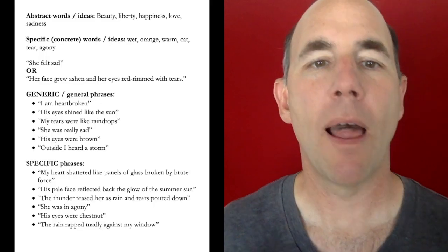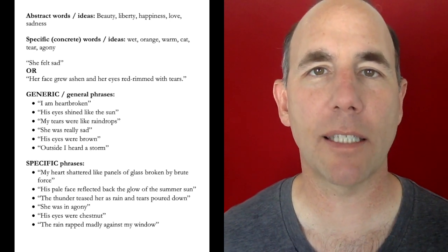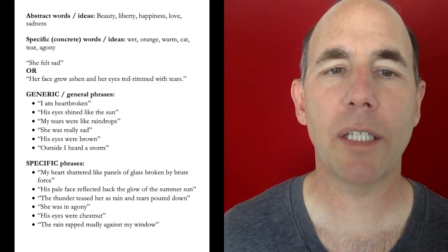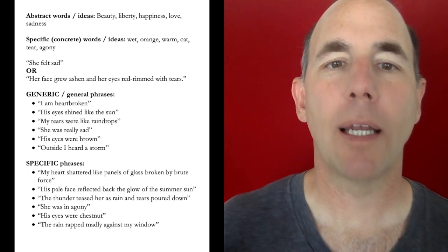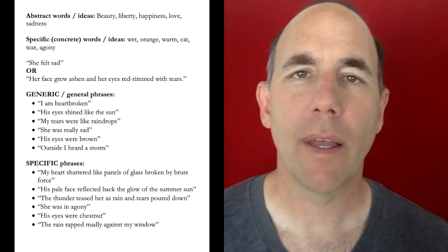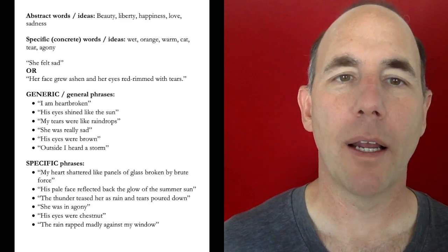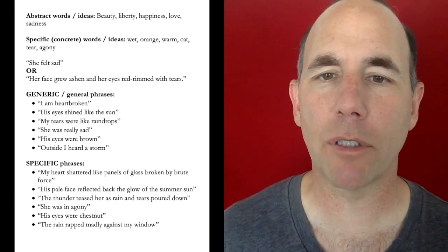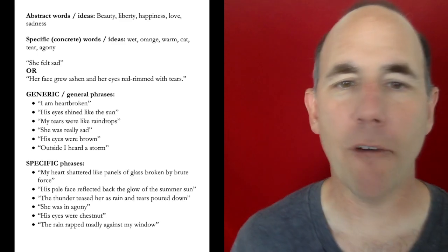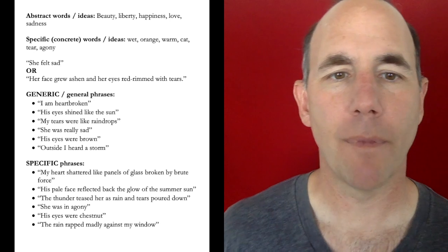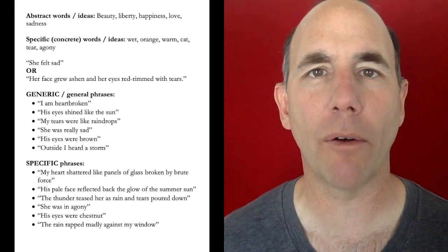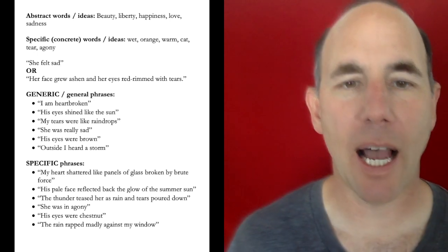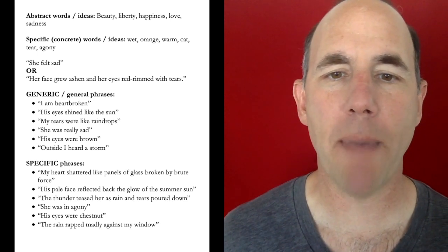Here are examples of generic writing: 'I am heartbroken. His eyes shined like the sun. My tears were like raindrops. She was really sad. His eyes were brown. Outside, I heard a storm.' Now more specific versions: 'My heart shattered like panels of glass broken by brute force. His pale face reflected back the glow of the summer sun. The thunder teased her while rain and tears poured down. She was in agony. His eyes were chestnut brown. The rain rapped madly against my window.' See — we're getting specific now.